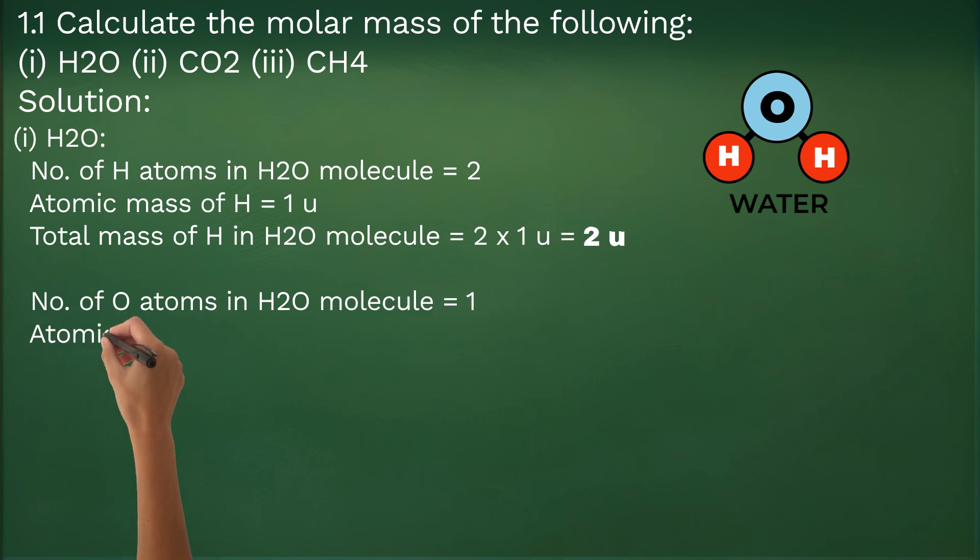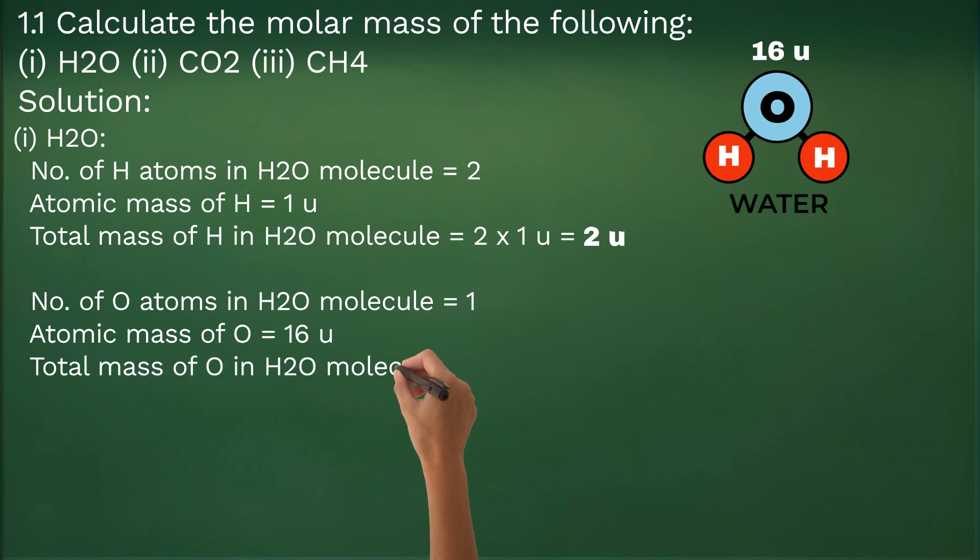Similarly, one atom of oxygen having atomic mass of 16U has a total of 16U in the H2O molecule. Thus molecular mass of H2O becomes 16U of oxygen plus 2U of hydrogen, that is 18U.